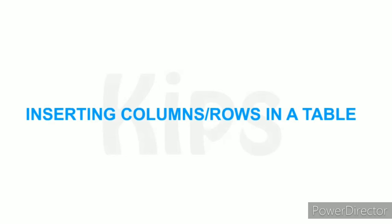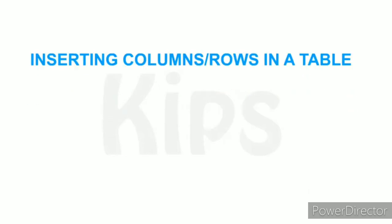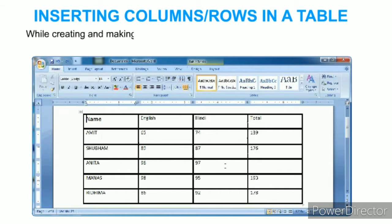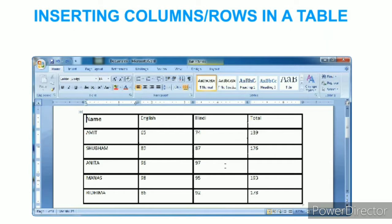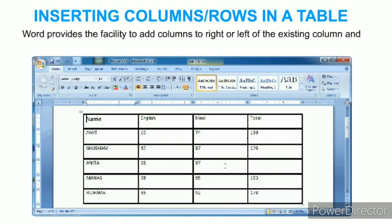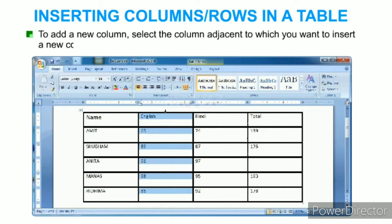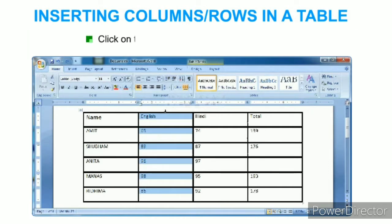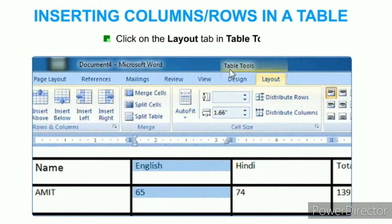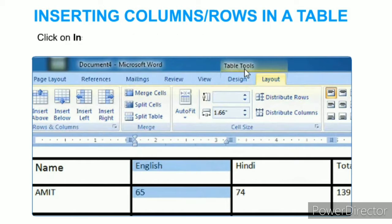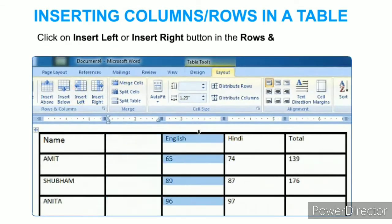To insert columns or rows in a table, Word provides the facility to add columns to the right or left of an existing column and insert rows above or below a selected row. Select the column adjacent to which you want to insert a new column, click on the top border to select it, then click on the Layout tab in Table Tools and click Insert Left or Insert Right in the Rows and Columns group.